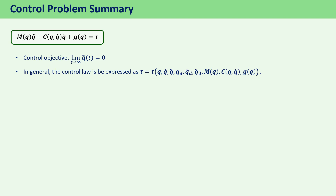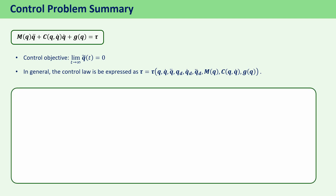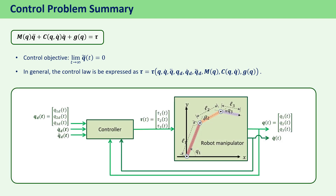For practical purposes, it is desirable that the controller does not depend on the joint acceleration, so it is usually assumed that the controller does not use Q-double-dot. The block diagram of the control system is shown in this figure. We will explain in the next video how the controller block can be designed so that the control objective is satisfied.